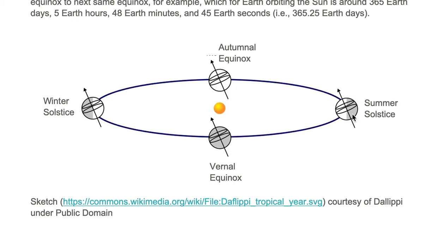The time the Earth takes to go from one summer solstice, around the Sun, one full orbit, to the very next summer solstice, is one tropical year, otherwise known as a solar year.